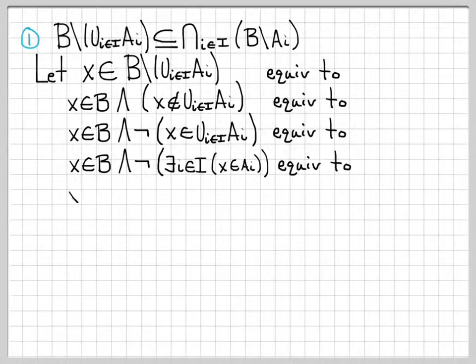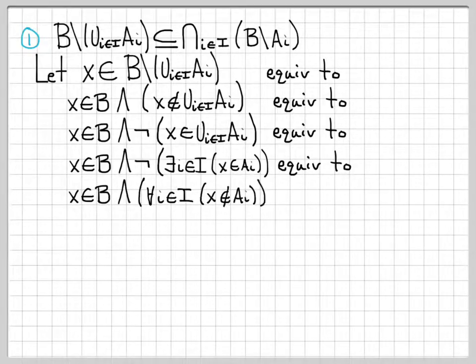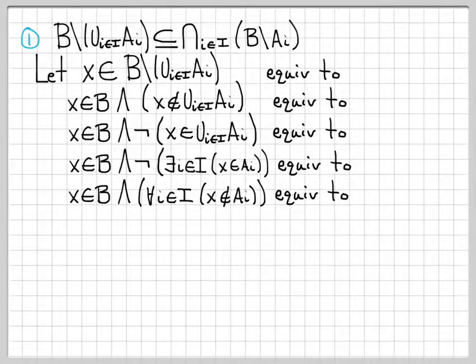This is logically equivalent to X is in B, and now we apply the quantifier negation law. We have 'not there exists,' which turns into 'for all i,' and then we negate the expression. The expression before was X in A_i, so now it becomes X not in A_i. We've replaced 'not there exists' with 'for all,' and then negated the logical expression. So: X is in B, and for all i in capital I, X is not in A_i.